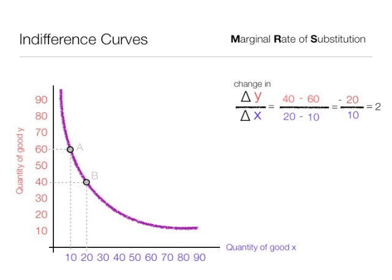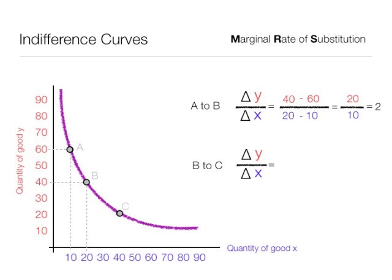If I continue on and I go from point B to point C, the consumer is giving up y to get some x. The formula becomes 20 minus 40 divided by 40 minus 20, which is equal to minus 20 divided by plus 20. So this turns out to be an even exchange and marginal rate of substitution is 1 in this case, an even exchange.